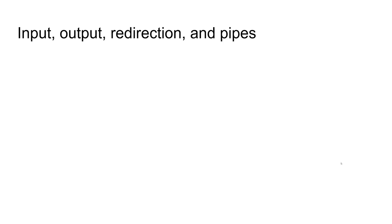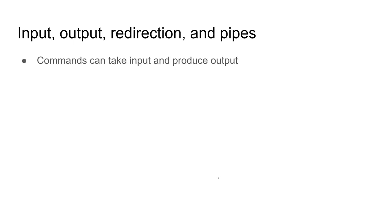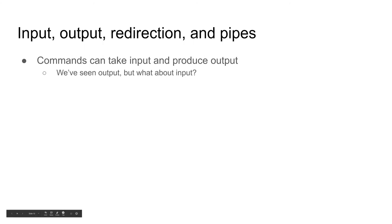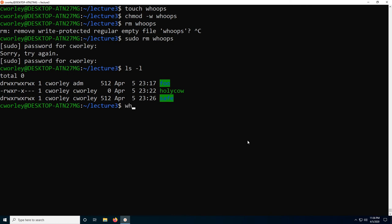That covers everything about permissions. The next thing I want to talk about is input, output, redirection, and pipes. Commands can take input and produce output. We've seen output before — for example, if I say whoami, the output is 'cworley'. That's what it says in response to the command.